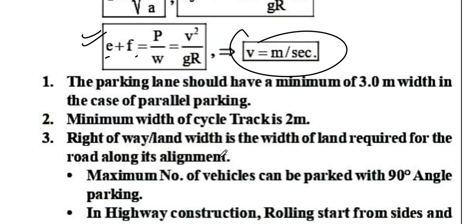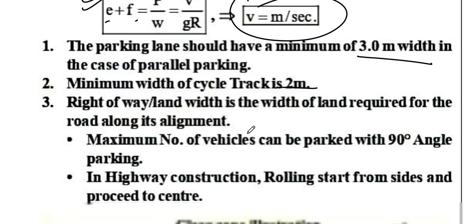Parking lane should have a minimum width of 3 meters, such as for parallel parking. A cycle track requires a minimum width of 2 meters. Right-of-way or land width is the total width of land required for the road along its alignment.